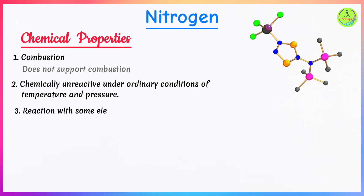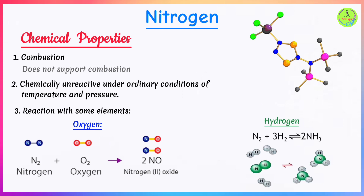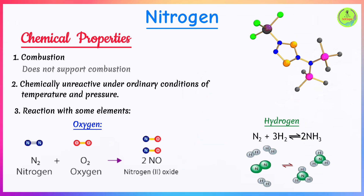However, nitrogen does react under certain special conditions. Nitrogen and oxygen react when heated at high temperatures to form nitrogen(II) oxide. Nitrogen and hydrogen react when heated in the presence of an iron catalyst and under high pressure to form ammonia — this is the process undertaken in the Haber process for the industrial manufacture of ammonia.